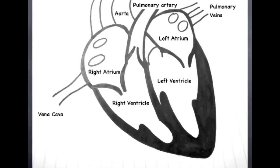The sequence of a heartbeat is a cycle, so let's start when the blood is in the atria. The atria contract and this pushes the blood into the ventricles. This is called atrial systole.